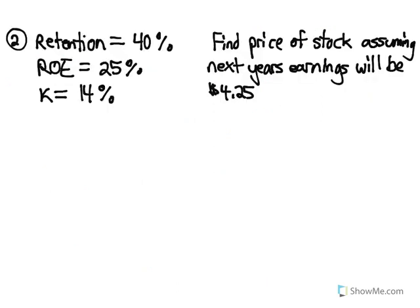Here's a second question on the same topic. We're given the retention rate this time, and it's really important to note whether you're given the retention rate or the payout ratio — those two things have to add to one, because every dollar that's earned is either paid out or retained. We're given the return on equity of 25%, a discount rate K of 14%, and we need to find the price of the stock assuming next year's earnings will be $4.25.